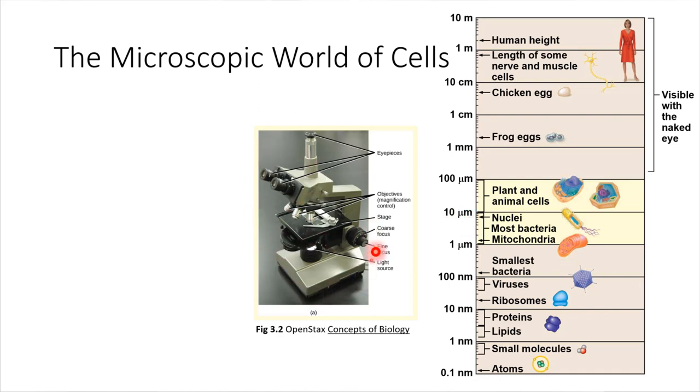This is a picture of a generic light microscope. Here are the eyepieces. These are also called the ocular lenses. If you were trying to study something, you would place your sample on this stage right here, and there's a light bulb down at the bottom.